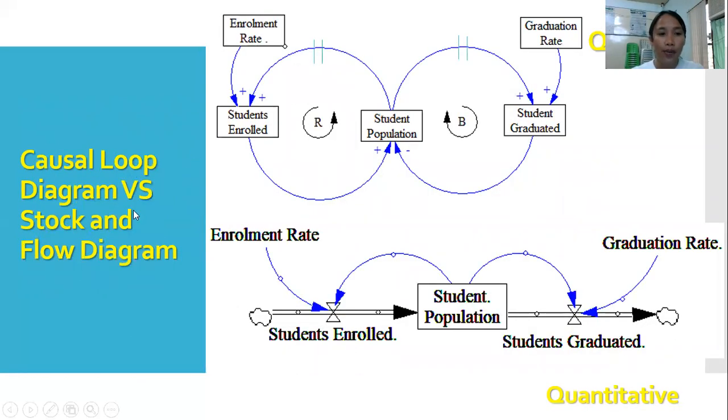What's the difference of a causal loop diagram to stock and flow diagrams? Well, both of these tools are very essential to systems dynamic modeling. The first step in modeling is to do this causal loop diagram. You must first draw a simple map of your system, which illustrates what are those components of your system and determining what are the feedback loops, may it be reinforcing or a balancing loop.